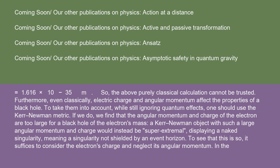If we do, we find that the angular momentum and charge of the electron are too large for a black hole of the electron's mass. A Kerr-Newman object with such a large angular momentum and charge would instead be super-extremal, displaying a naked singularity.